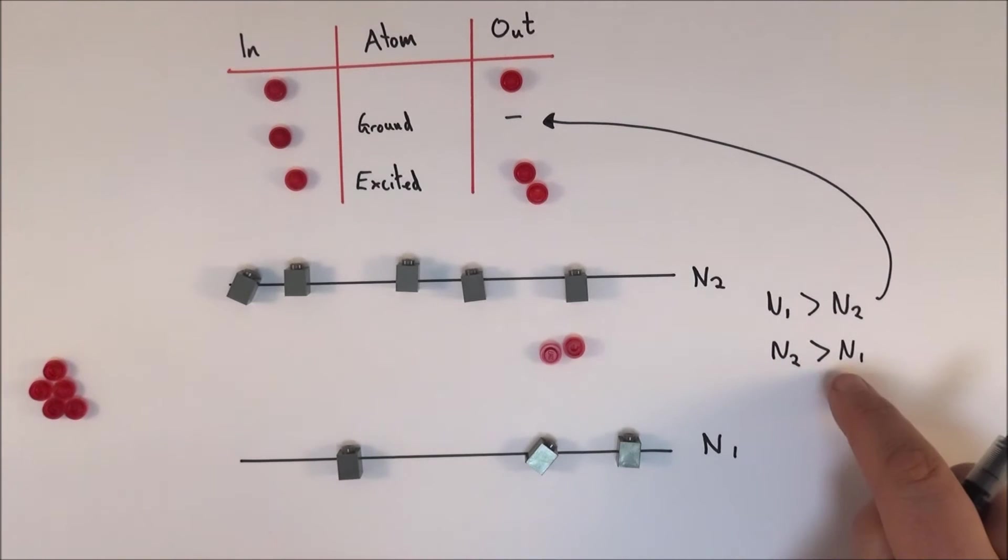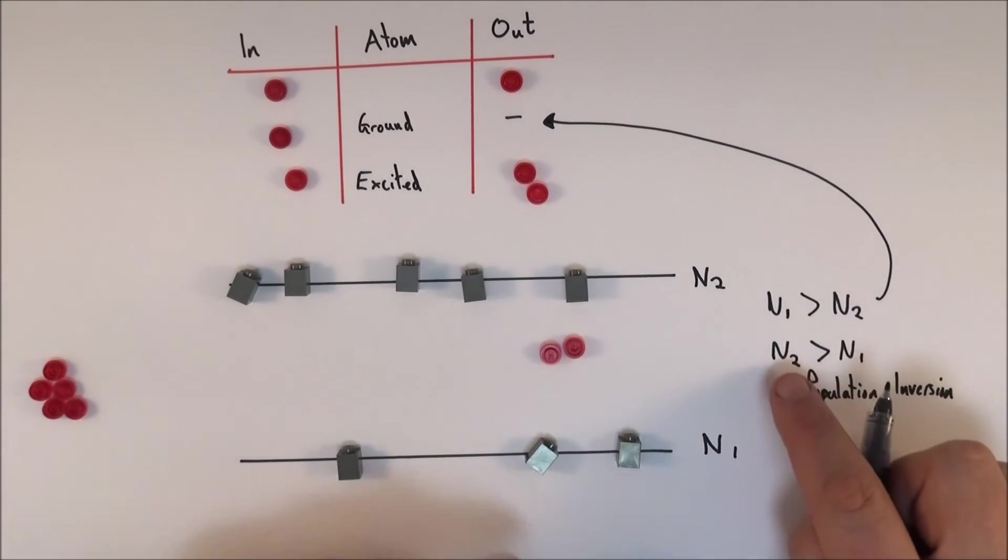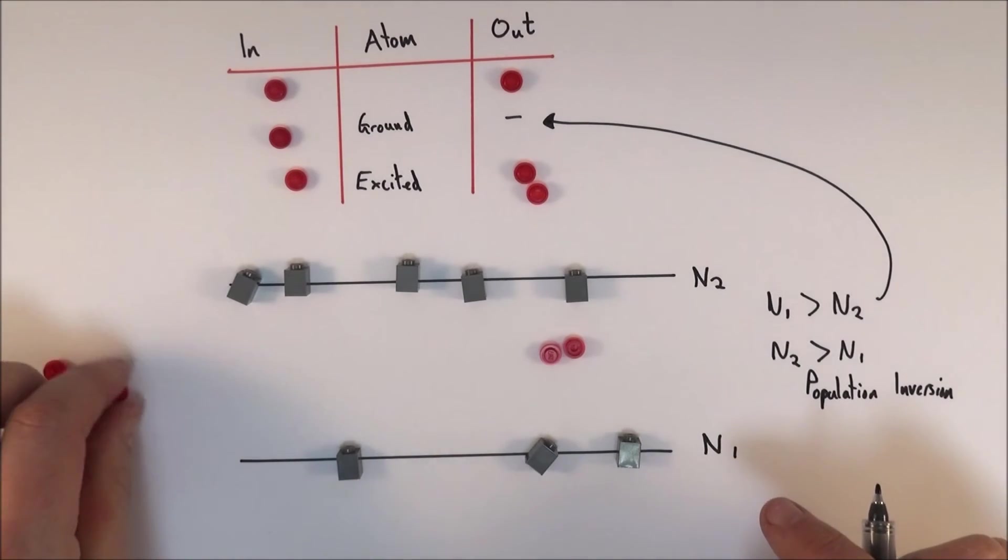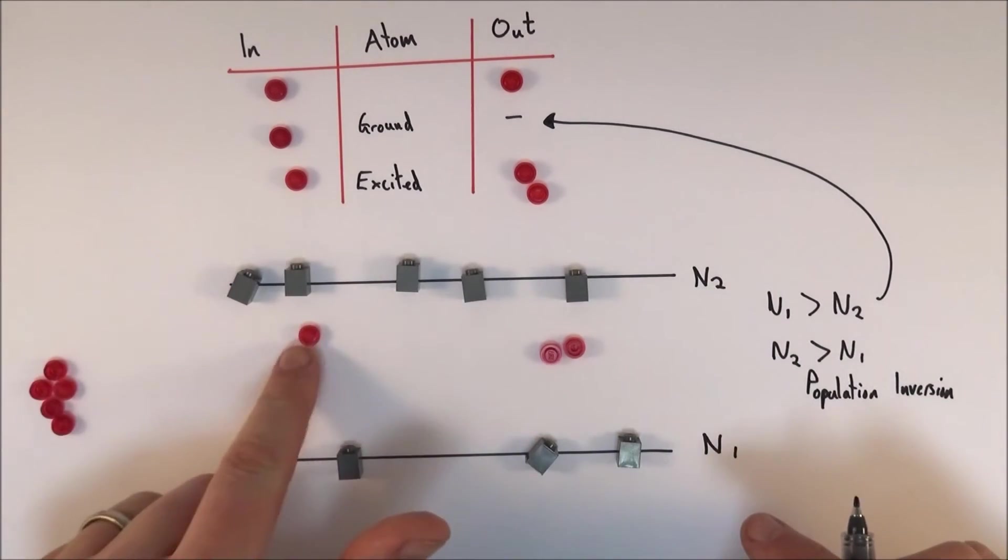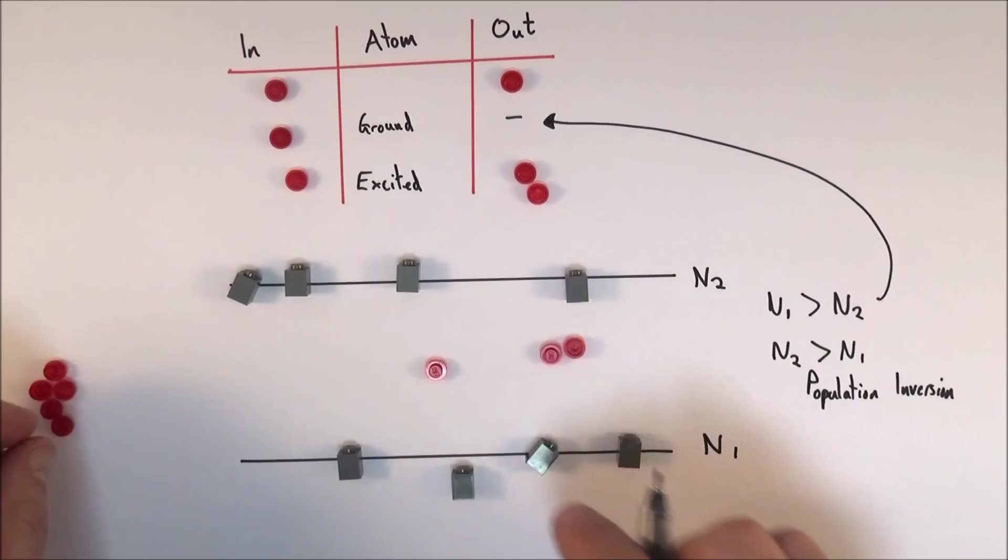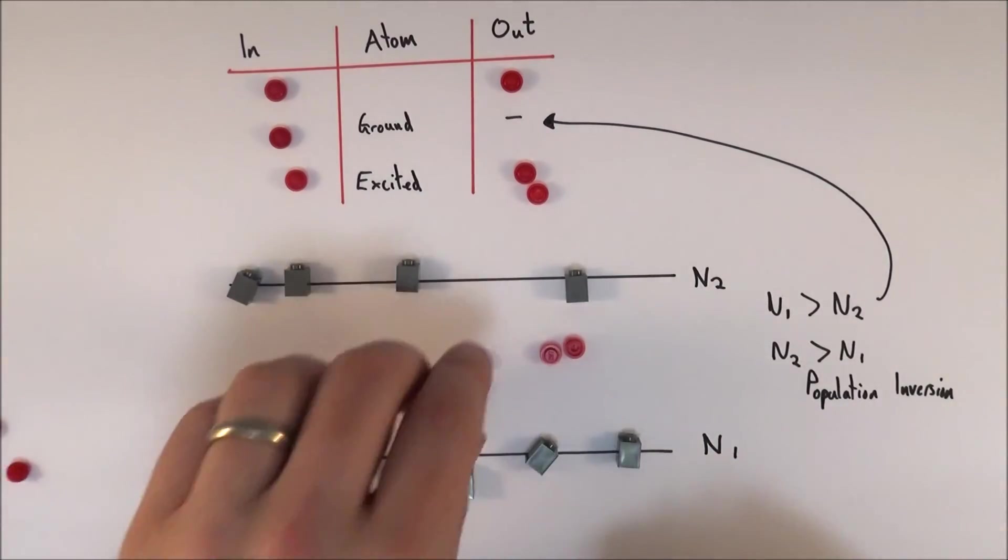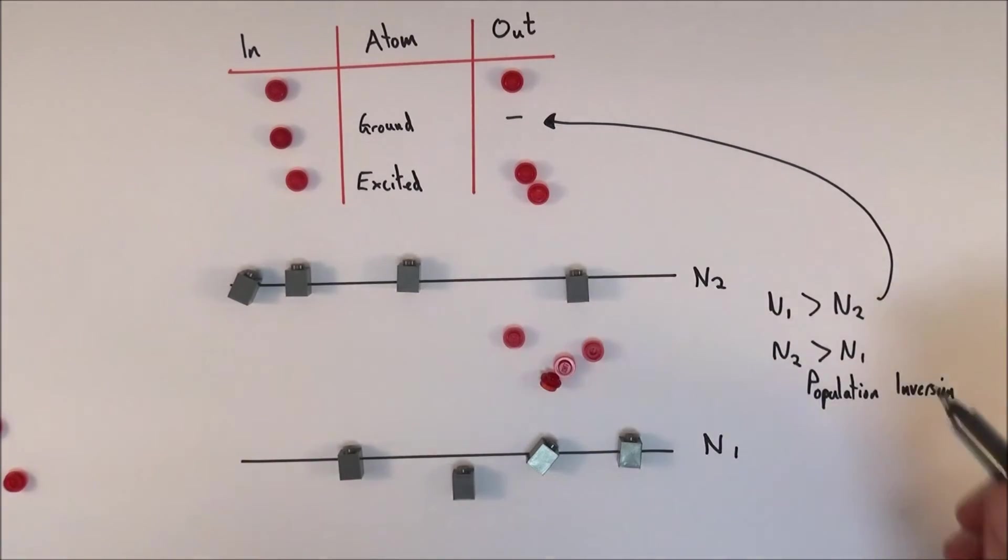If n2 is bigger than n1, we say that we have a population inversion. And when you have a population inversion, because there's more excited atoms than unexcited, every time you have a photon coming in it causes one of these to drop down and gives out—again, it doubles the amount of photons. Then you get this increase in photons, which is what we need.